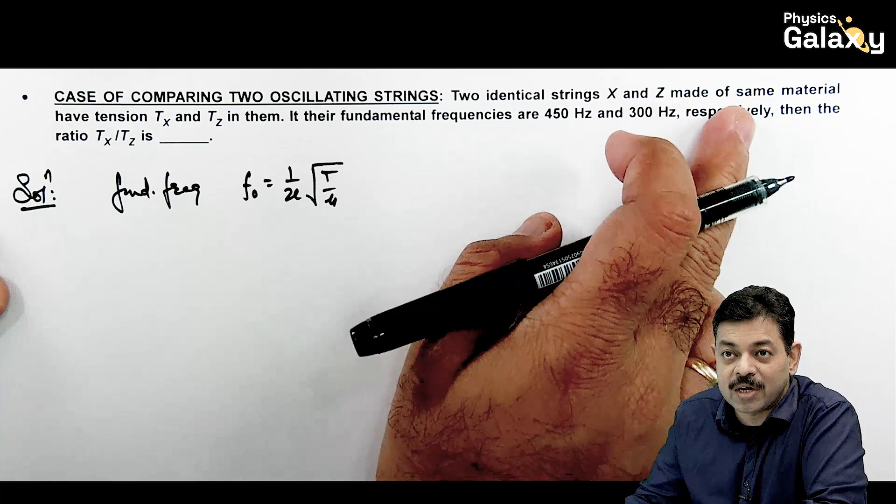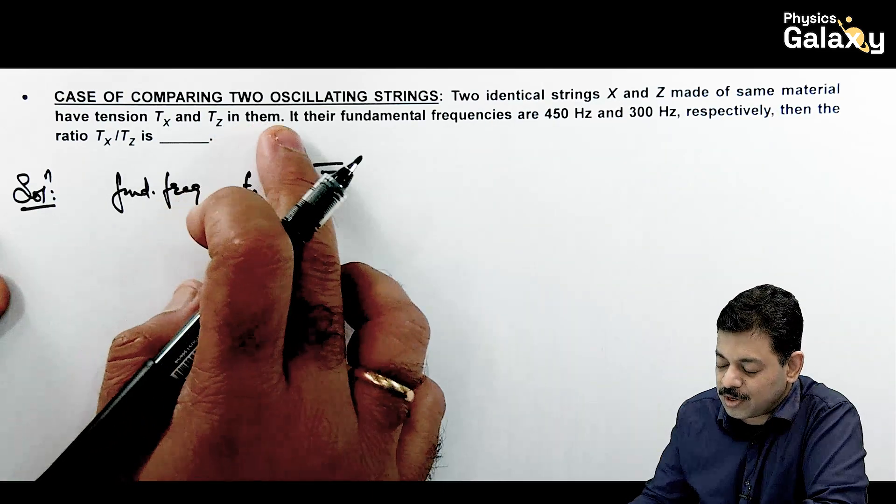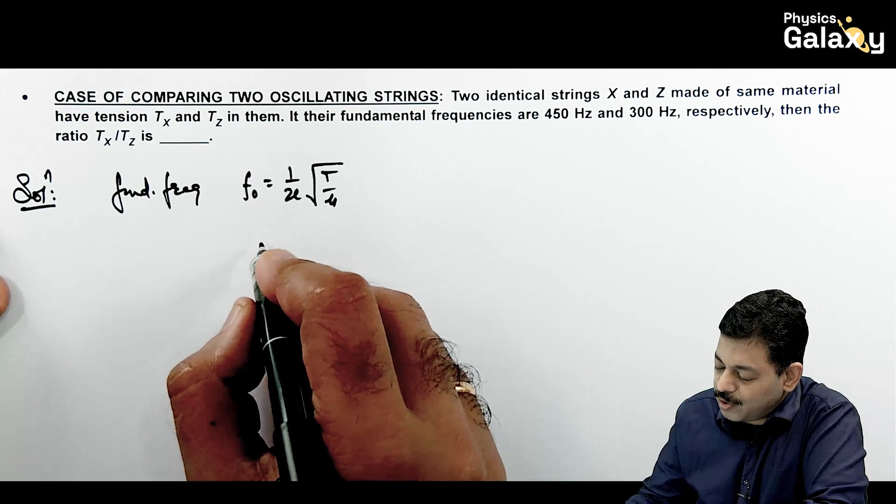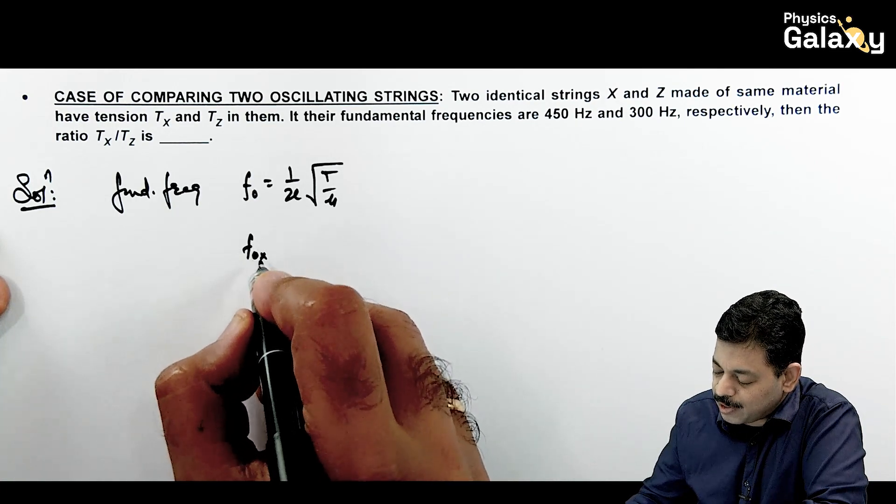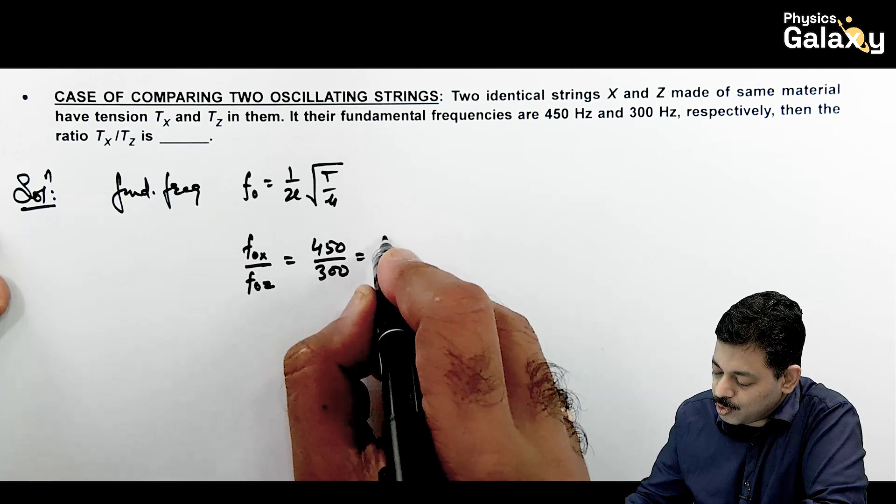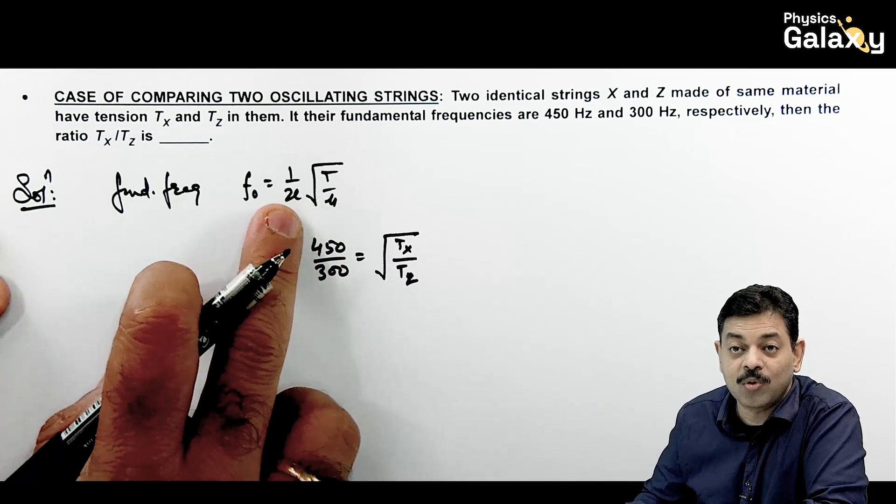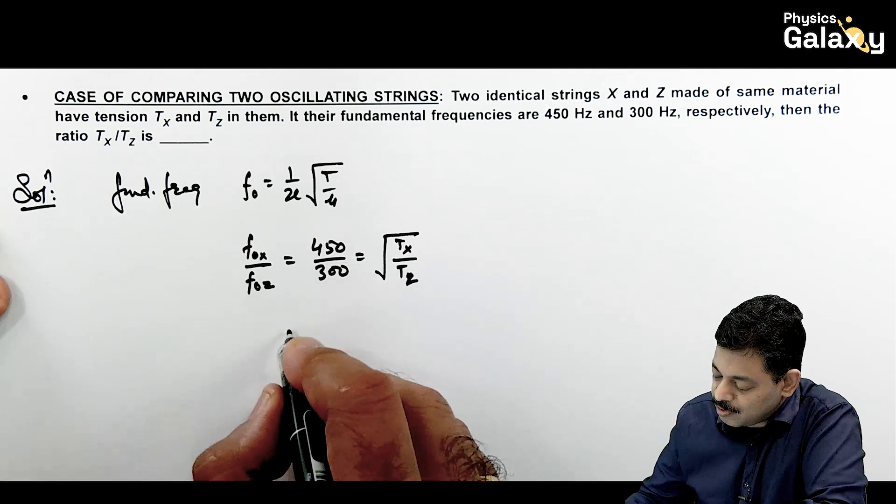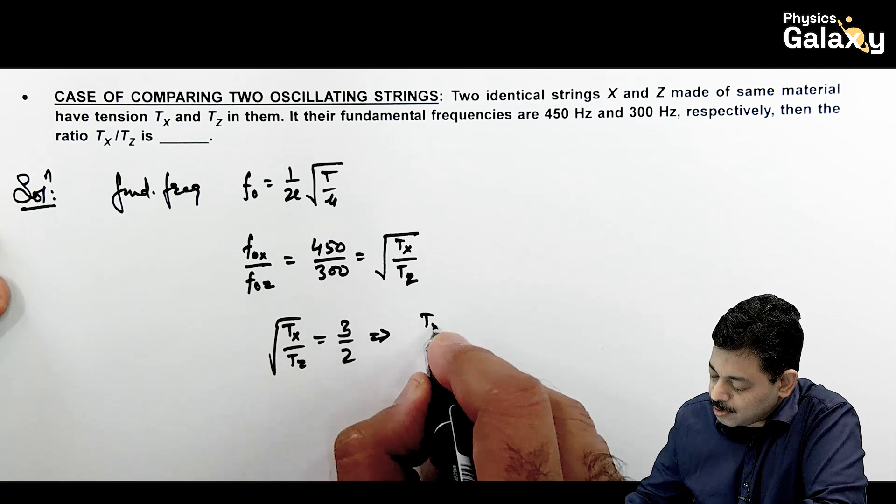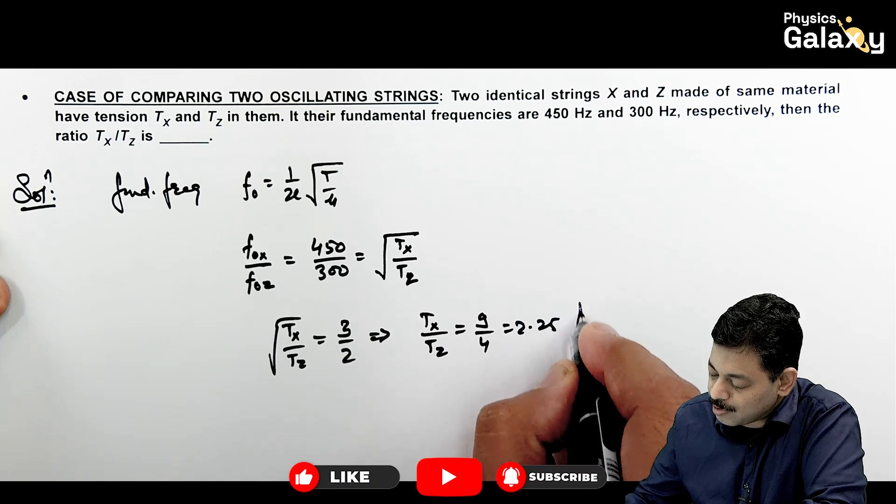Or identical strings hain material bhi same hai. It means cross sectional area, length sab kuch same hai. Density bhi same hai. Tension ka difference hai. So ab directly yahan pe likh sakti ho fundamental frequencies 450 aur 300 hain. Aur in this situation we can simply write f0x upon f0z which is equal to 450 upon 300 should be equal to root of Tx by Tz. This is what we can relate kyunki mu and length dono hi same hain. So yahan pe if we see, so this gives us Tx by Tz root is equal to this is 3 by 2. So this gives us Tx by Tz square kar dete hain, it is 9 by 4. This is 2.25. That is the result of this problem.